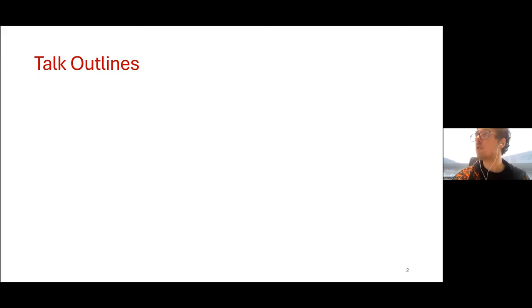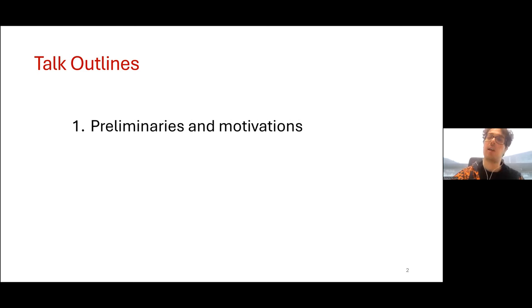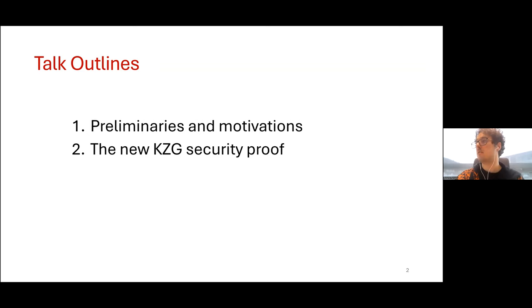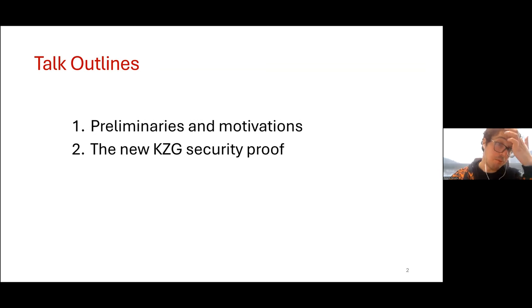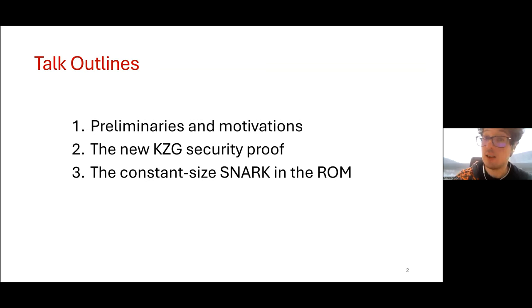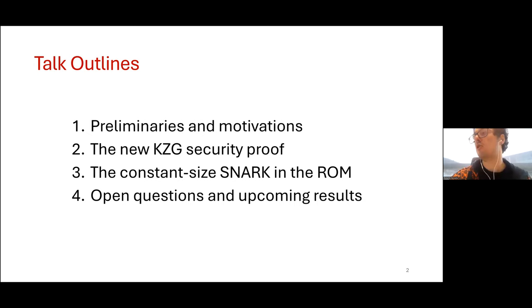So let's jump into it. The talk will be divided into four different chapters. I will start with some preliminaries and also explaining the main motivations for our work and why we should care. Then I will present the main result of this paper, which is a new security proof for the KZG extractability. I will define the KZG commitment scheme and also explain what its extractability property is. Then I will briefly present what we built on top of our first result — how we construct the constant size NARC in the random oracle model promised in the title. And lastly, I will briefly mention some open questions, and some of them we have found solutions for, which will come in the form of a follow-up work.